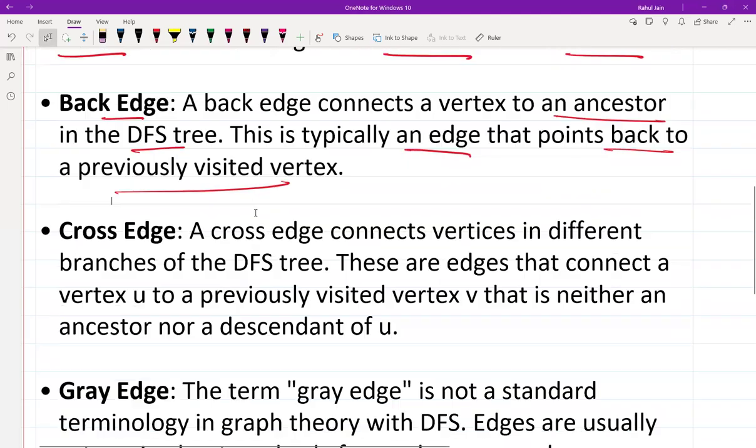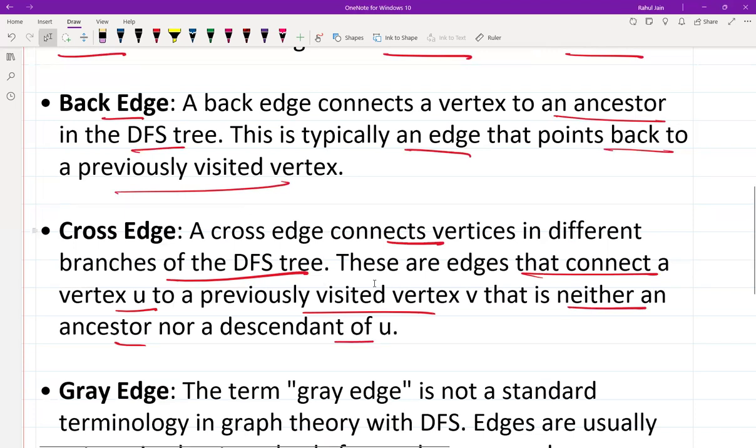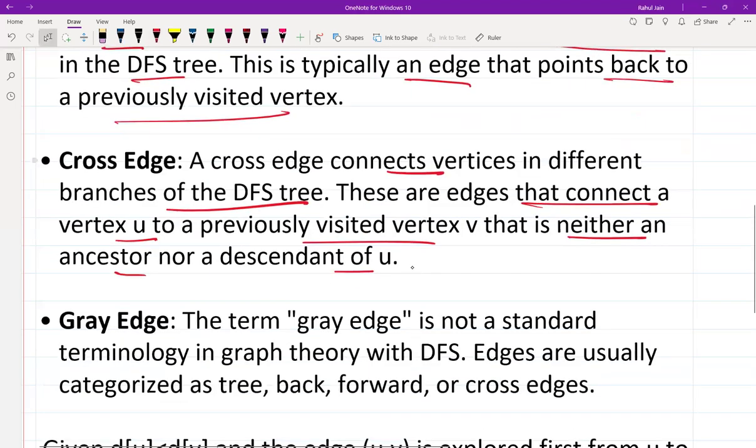Cross edge connects vertices in different branches of the DFS tree. These are edges that connect a vertex U and a previously visited vertex V that is neither an ancestor nor a descendant of U. Gray edge—the term gray edge is not standard terminology in graph theory with DFS; it is unnecessarily mentioned here.